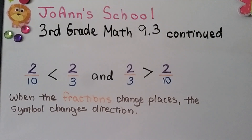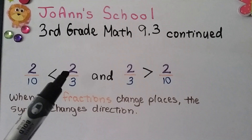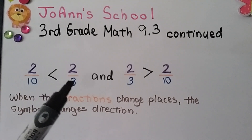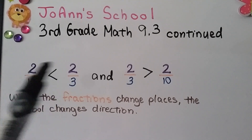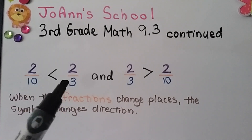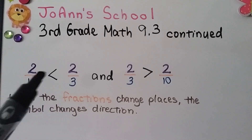Keep in mind that when the fractions change places, the symbol will change direction. We have two-tenths and two-thirds. Two-thirds has the lower denominator because the numerators are the same, so two-thirds is the larger fraction.